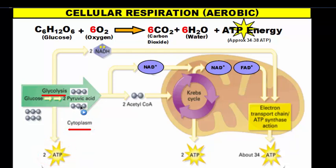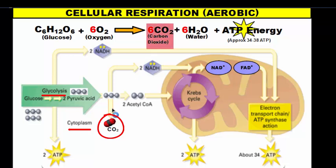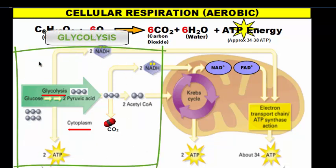Our pyruvic acid then reacts with another NAD+ molecule — another delivery truck waiting for a package. It reacts with the pyruvate and picks up the hydrogen atom package: two hydrogens and two electrons, which are carried into the electron transport chain. As a result, we lose a carbon and start to create carbon dioxide — this is where we begin making waste. Because we lose a carbon, pyruvic acid becomes acetyl-CoA, which then transports hydrogens into the mitochondria. This whole process of glycolysis occurs outside of the mitochondria in the cytoplasm.